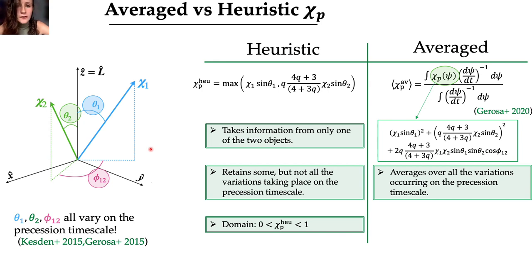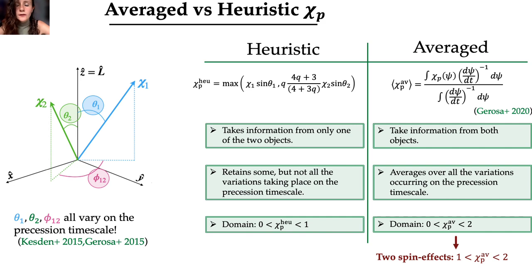And that's why we need to introduce a new average definition of the precessing spin parameter, which represents a more faithful characterization of spin precession. The average χp is an integral that averages over all the variations occurring during the precession timescale, which are contained in this expression χp of ψ, where ψ is a quantity that parametrizes the precession cycle. Furthermore, it takes information from both objects that compose the binary system, and most importantly, it fully takes into account two spin effects, because it includes a dedicated region of the parameter space where χp varies between 1 and 2, that was forbidden in the previous heuristic approximation, and that is exclusive to binary systems with two misaligned spins.